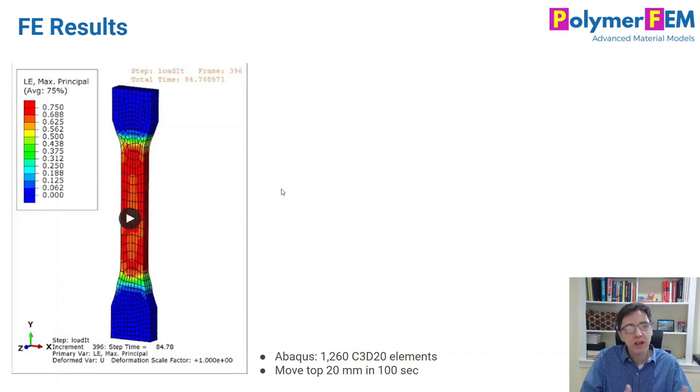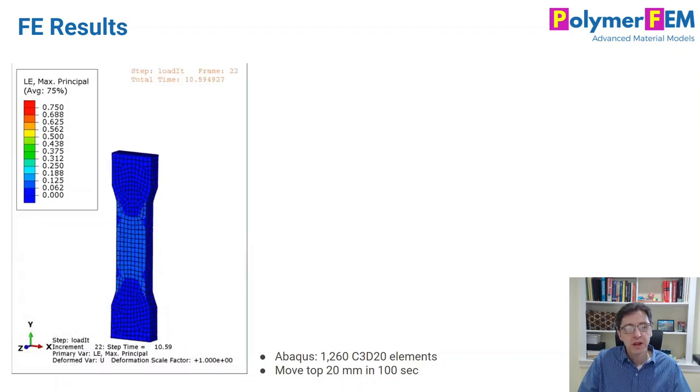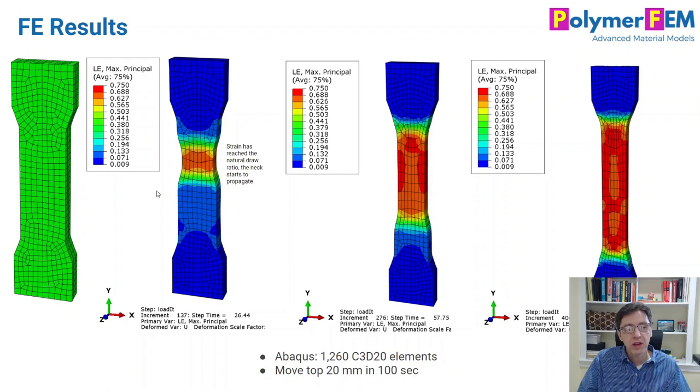which is a material property. Just like the yield stress is a material property, the natural draw ratio is also considered a material property.